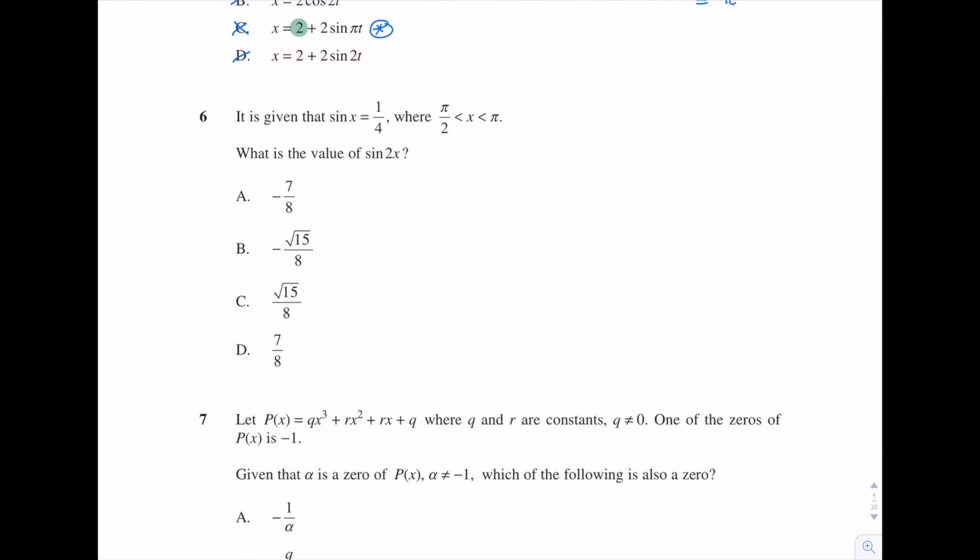Question 6. It is given that sin x = 1/4, where x is between π/2 and π. What is the value of sin 2x? Okay, so sin 2x. Well we're given the value of sin x and we want to find sin 2x. Well what is sin 2x? Well we know our double angle formulas tell us that it's 2 times sin x times cos x. Now we need to work out what the value of cos x is because we already know what sin x is.